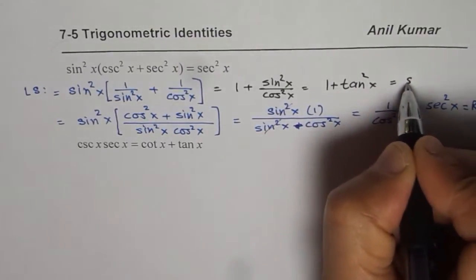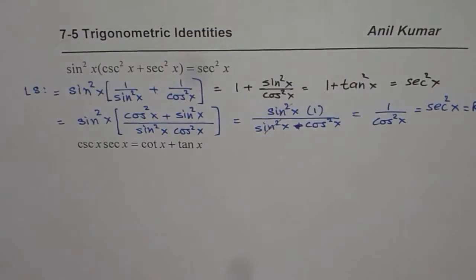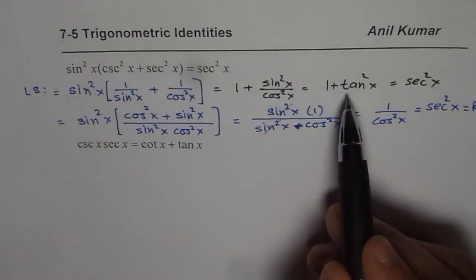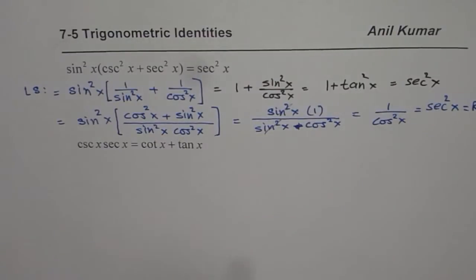Now 1 + tan²x is sec²x. So that becomes an alternate way of doing it. That is a trigonometric Pythagorean identity: 1 + tan²x is sec²x. But either way you can get your result.